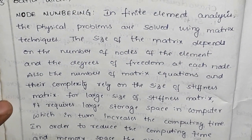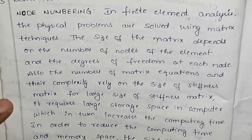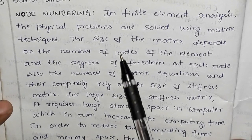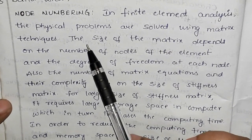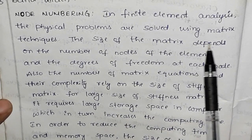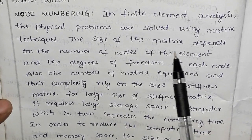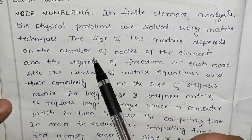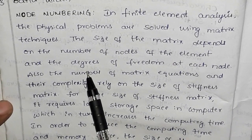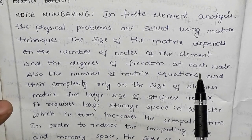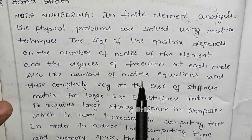Hi friends, welcome back to our channel. Here we have node numbering in FEA. In finite element analysis, physical problems are solved using matrix techniques. The size of the matrix depends on the number of nodes of the element and the degree of freedom at each node, as well as the number of matrix equations.